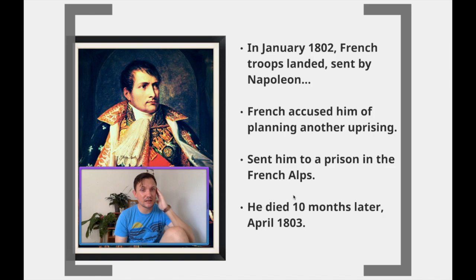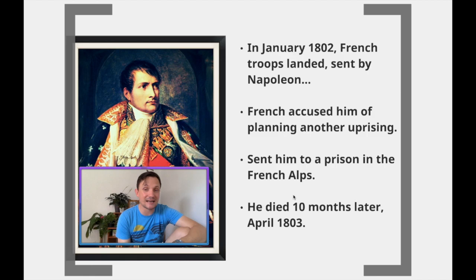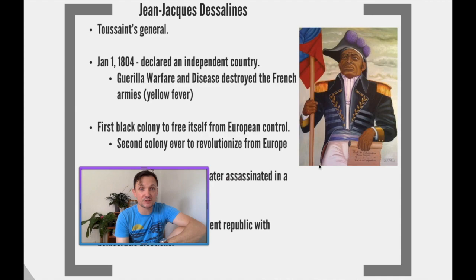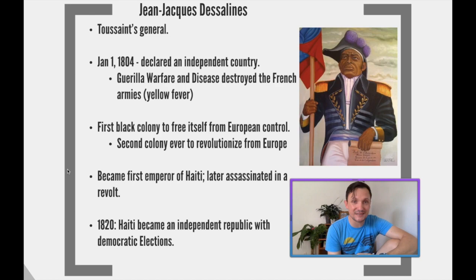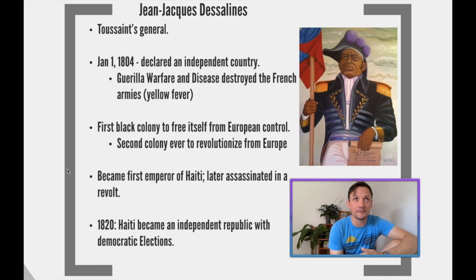He's also a heavily debated figure because a lot of people talk about how he basically brought some forms of forced labor back. Even though he was captured by Napoleon and sent to the French Alps, dying there in prison in 1803, when this occurs, the French troops are still there. Toussaint's general and second-in-command, Jean-Jacques Dessalines, takes over another slave revolt, and on January 1st, 1804, Haiti becomes an independent country under his leadership. Later that year, Dessalines may have had around 4,000 French people still on the island massacred.